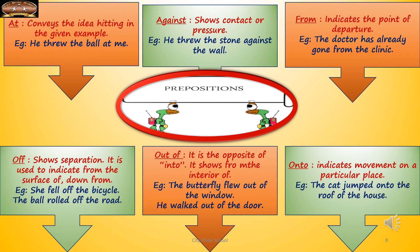'Off' shows separation — the boy fell off the chair. It shows the girl separated from the bicycle; used to indicate 'from the surface of' or 'down from'. 'Out of' is the opposite of 'into' — if 'into' means moving into the interior of something, 'out of' means going out from the interior. The butterfly flew out of the window — it was inside and went out. 'Onto' indicates movement on a particular plane — the cat jumped onto the roof of the house, showing movement onto the roof.